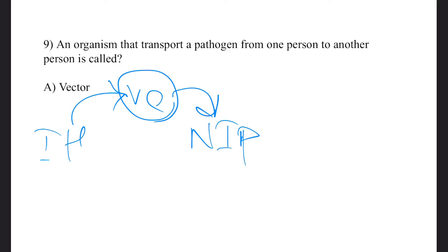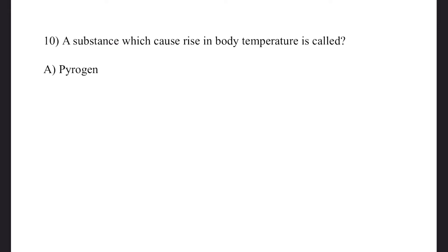Next, Question 10: A substance which causes a rise in body temperature is called? Answer: Pyrogen. Yes, this substance is typically produced by bacteria. This substance produces fever - a rise in temperature - when introduced or released into the blood.